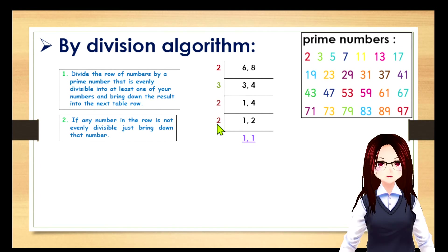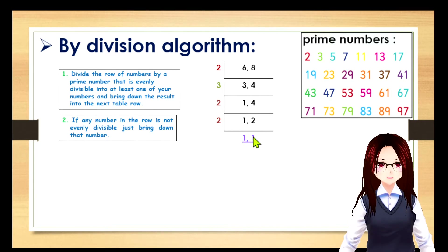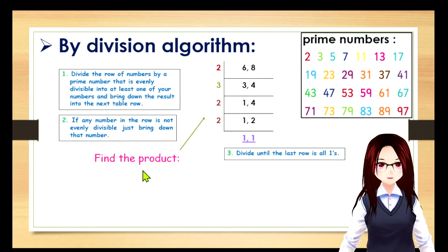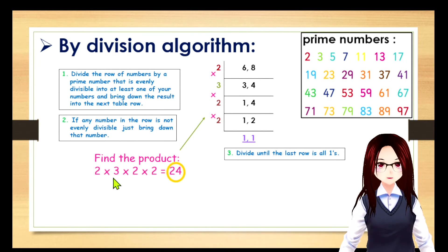Now we divide again by the prime number 2: 1 divided by 2 — you cannot divide, so bring down 1; and 2 divided by 2 equals 1. You divide until the last row is all 1s. The last row is now all 1s, so find the product of the prime numbers: 2 × 3 × 2 × 2 = 24. This is your LCM.